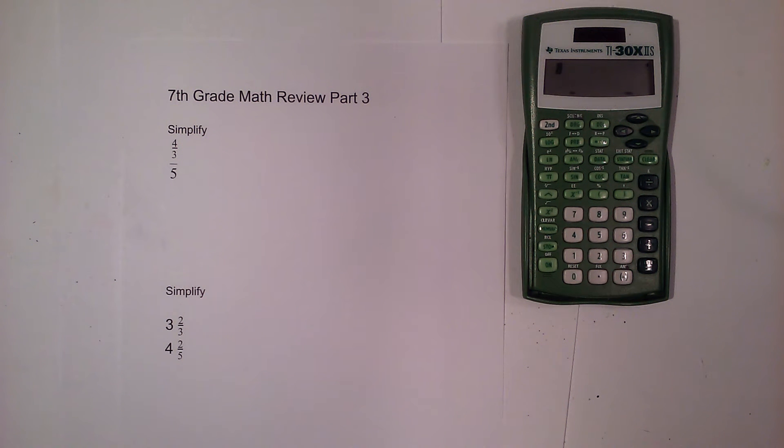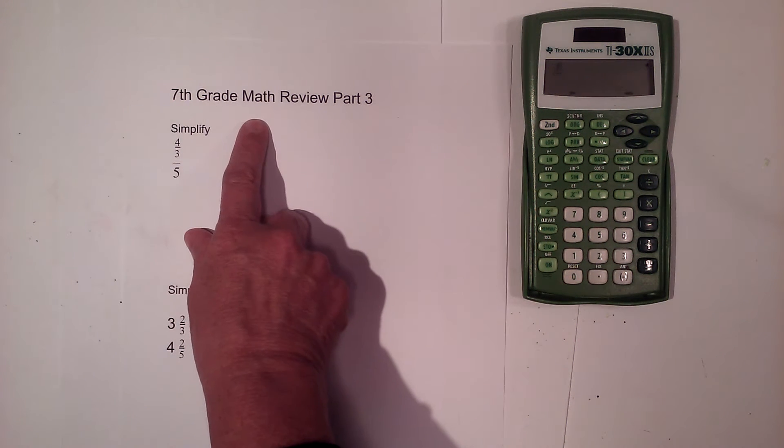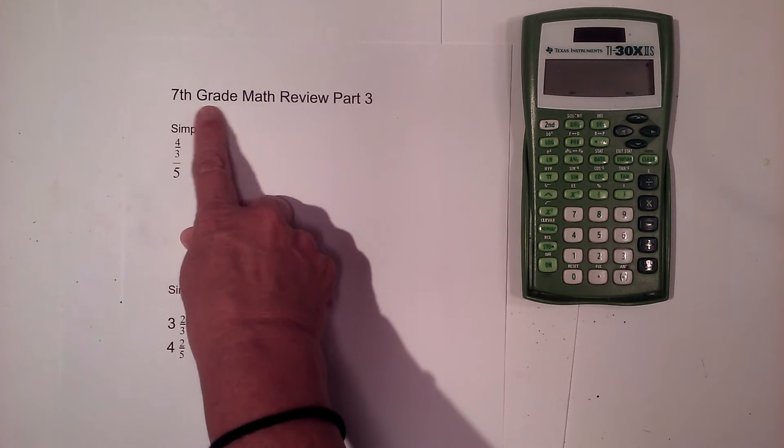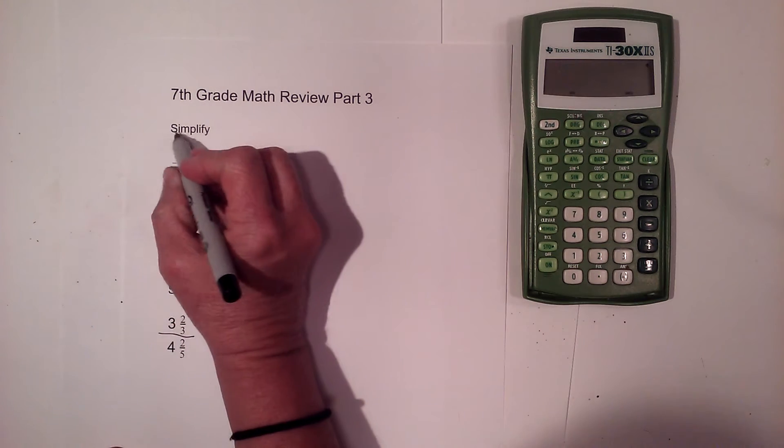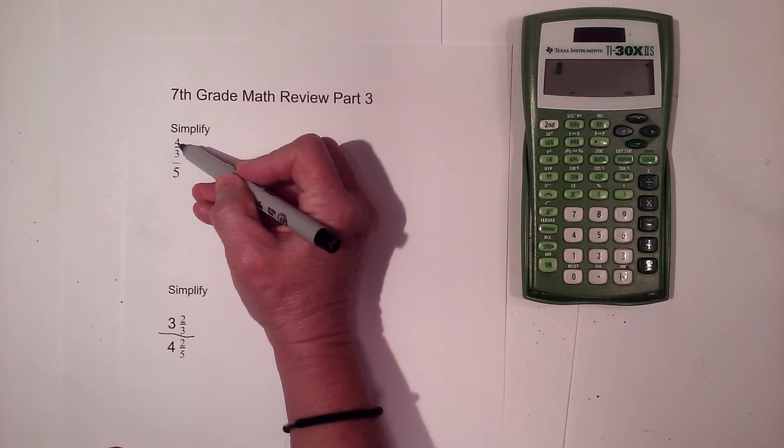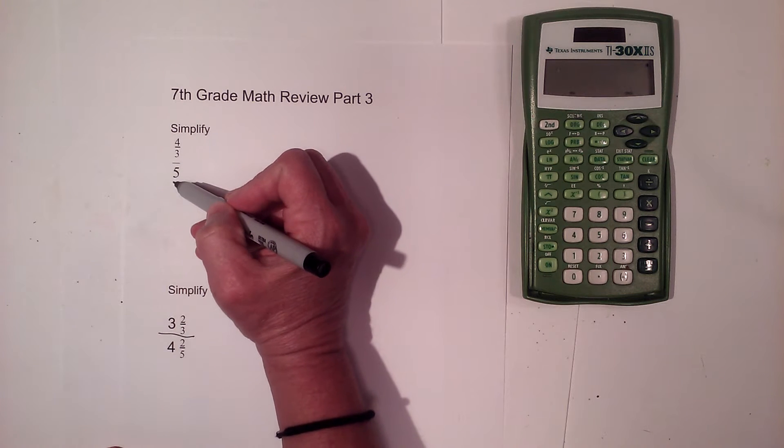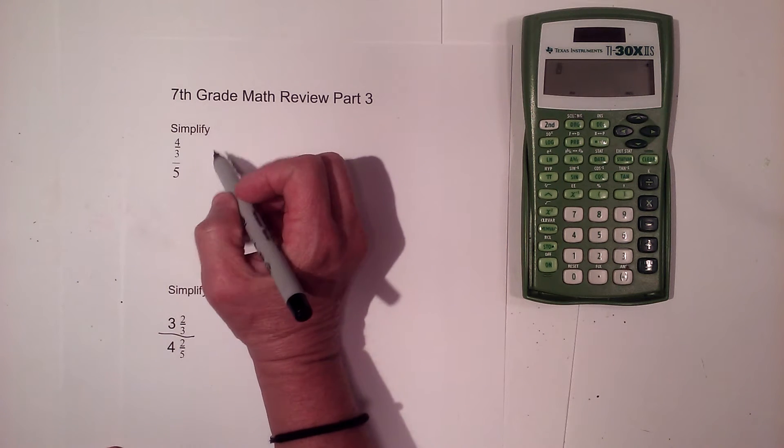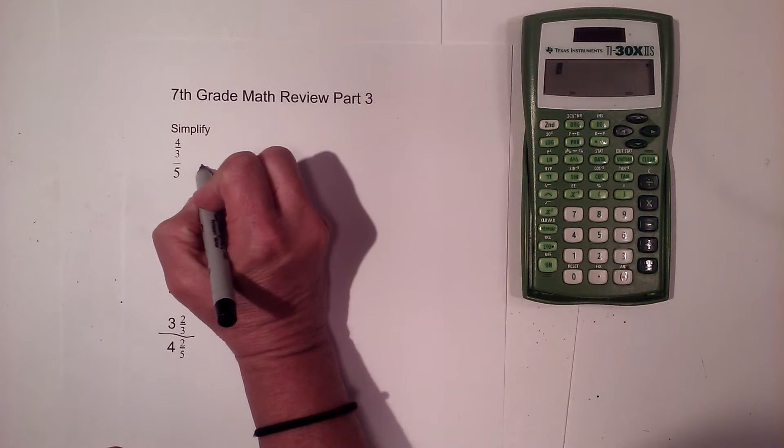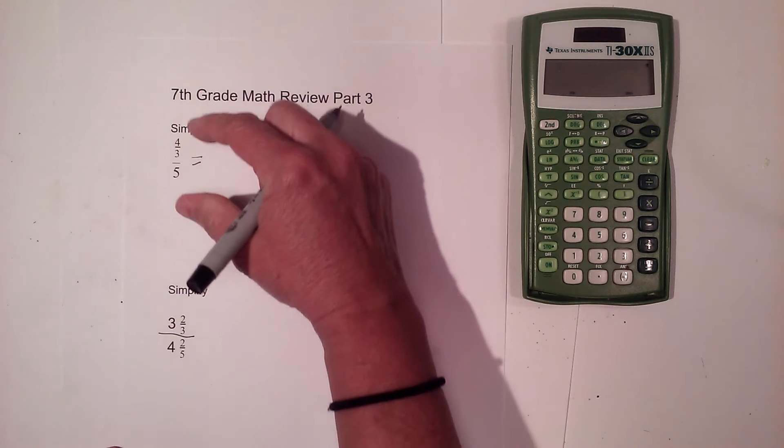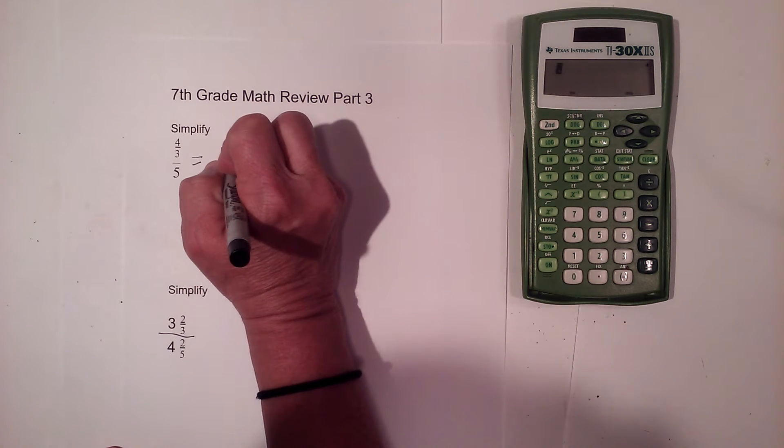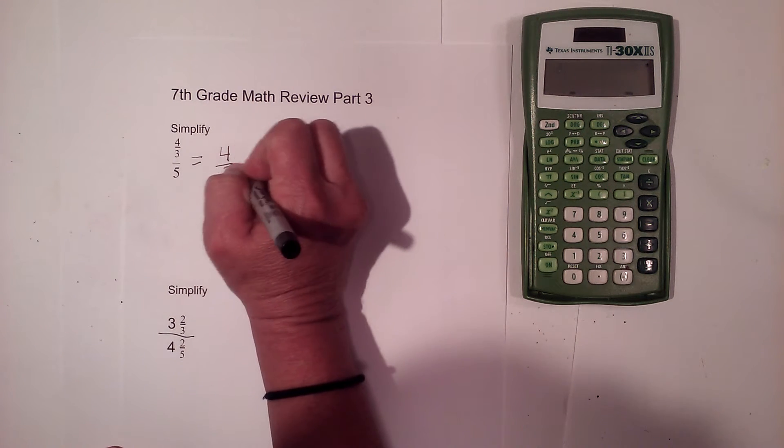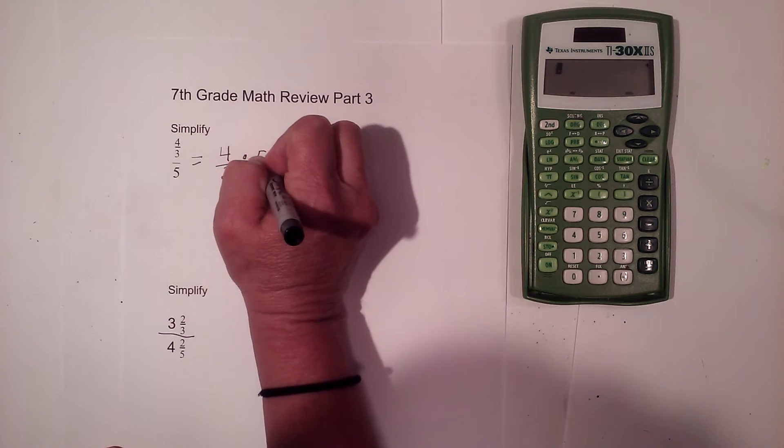Welcome to Moo Moo Math. Today we are looking at the 7th grade math review, the whole year in review part 3. So we are doing some division. We have the fraction 4 thirds divided by the whole number 5. I'm going to rewrite this instead of being a double stack, I'm going to stretch this out as a division problem and write this 4 thirds divided by 5.